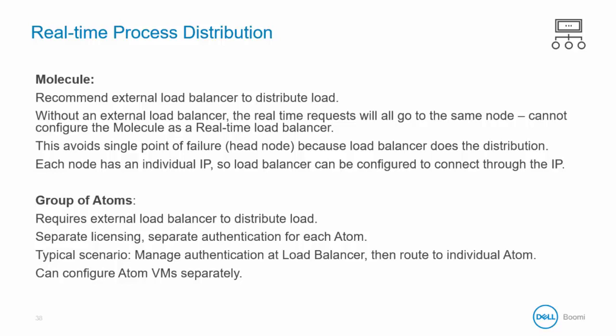A group of atoms is a different setup. It too requires an external load balancer, which can then direct requests to particular atoms. The big difference is that adding nodes does not impact your license count in a molecule, but adding atoms to a group of atoms does impact your license count, and those atoms need to be maintained independently. There are some specific use cases where this would be advantageous — for example, you can configure each atom separately and apply heavy resources to the more used atom and lighter resources to the less busy one.